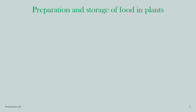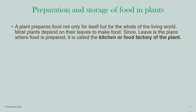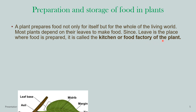Preparation and storage of food in plants. A plant prepares food not only for itself but for the whole of the living world. In some form or another, we all eat plants and get energy from them. Herbivores eat plants, then carnivores eat herbivores. Most plants depend on their leaves to make food, which is why the leaf is called the kitchen or the food factory of the plant.